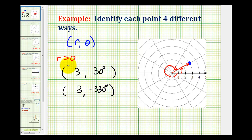Now let's list two ordered pairs when r is less than zero. When r is less than zero, the point is going to lie on the ray pointing in the opposite direction of the terminal side of theta.